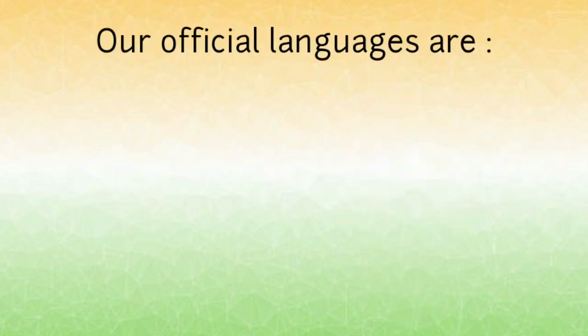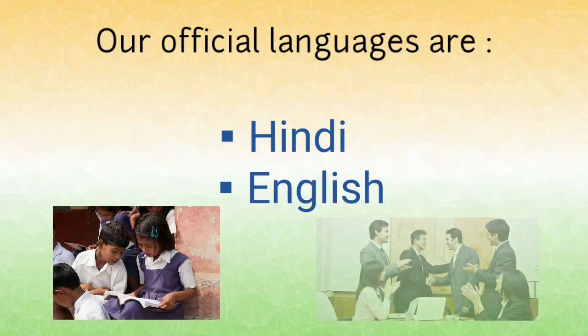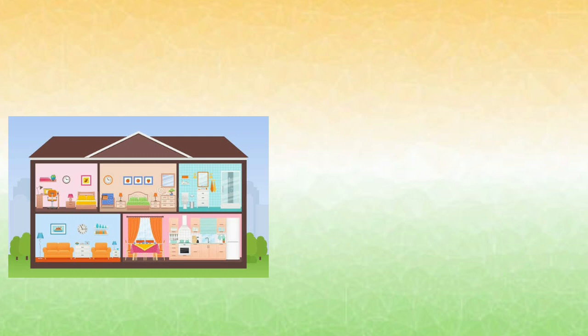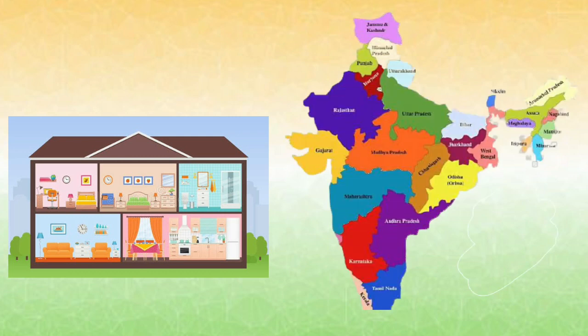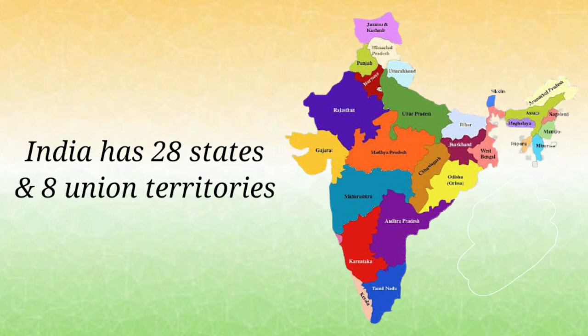Our official languages are Hindi and English. In schools or at the workplace, we speak Hindi as well as English to communicate with each other. Children, just like we have different rooms in our house, we also have different states in our country. India has 28 states and eight union territories.